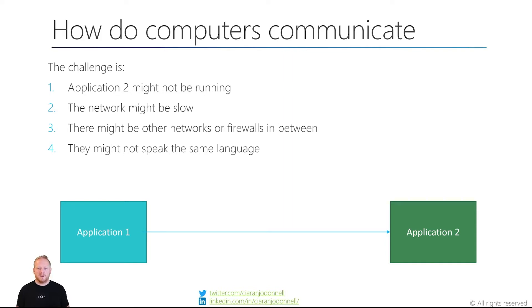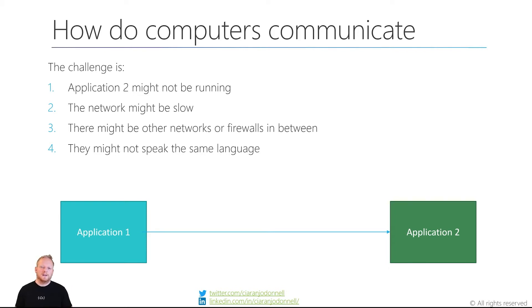Application two may not be running, so that might be our number one obstacle — it's actually not there to connect to. It might also be running slow or its network might be slow, so it might not be able to push data through as fast as we'd want from application one's perspective. There might be a network firewall in between, so there might not actually be a network path between the two applications that we can connect through directly. And the other challenge is they may not speak the same language. If these are different teams, different people, different companies building different applications, they may end up not speaking the same language entirely.